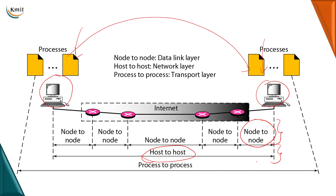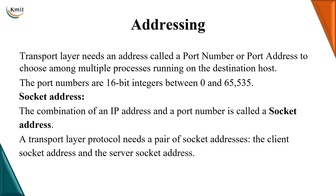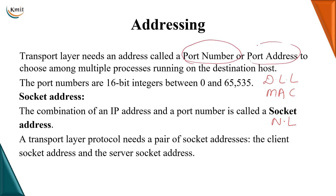Now the other thing is about the address of the processes, so let us see the addressing mechanism of the transport layer. In the data link layer we have local addresses which are MAC addresses, also called physical addresses. At the network layer we have a universal addressing scheme called logical addressing, or IP addresses. But at the transport layer we are doing process-to-process delivery — delivering a packet from process A to process B. So we require the address of those application programs or processes, called the port number. Port number is the address, or the way to identify the processes running on the machines. A port number or port address is a 16-bit integer, meaning I can have as many as 2^16 port numbers ranging from 0 to 65535.